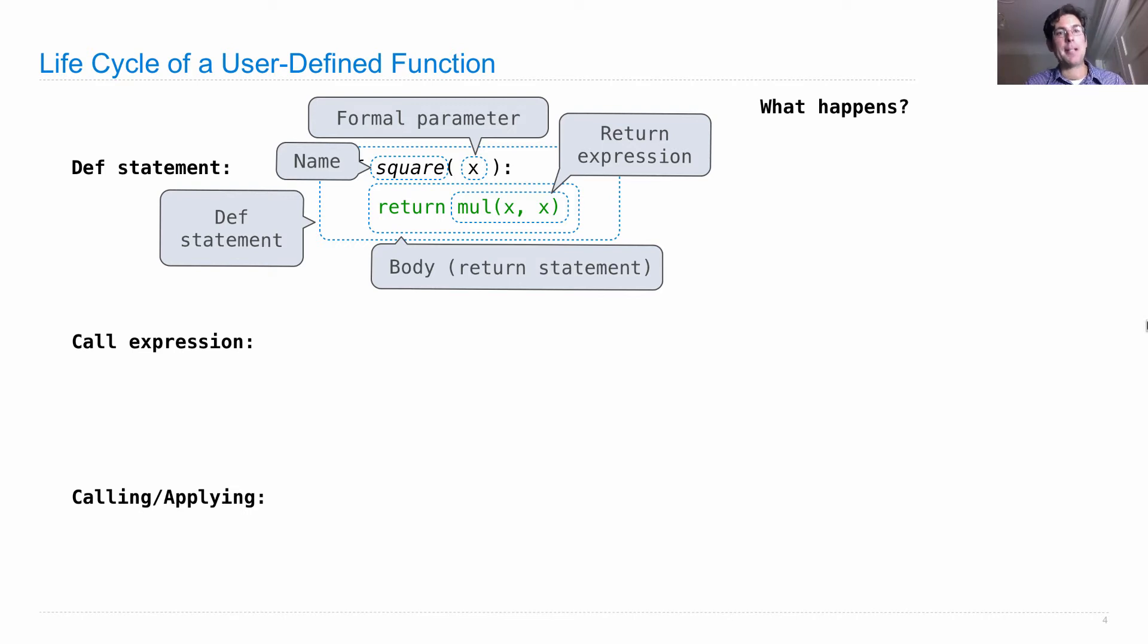Okay, so a def statement comes along, we execute it, what happens? A new function is created, and then the name given to that function is bound to that function in the current frame so that we can now refer to that function and call it.